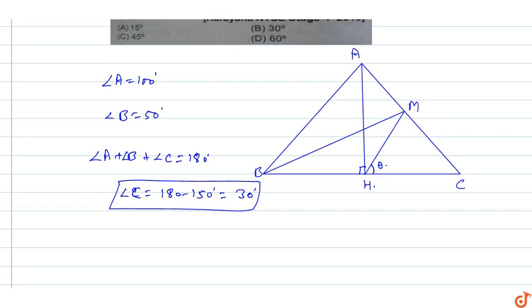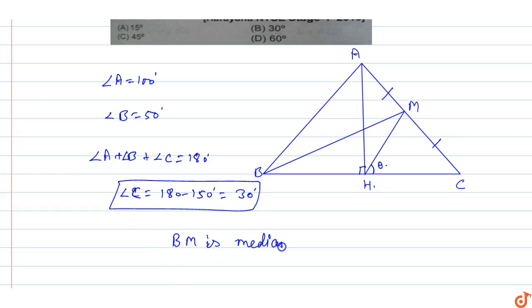Now, BM is the median, so AM is equal to MC. Since BM is a median, it divides the opposite side AC such that AM equals MC.